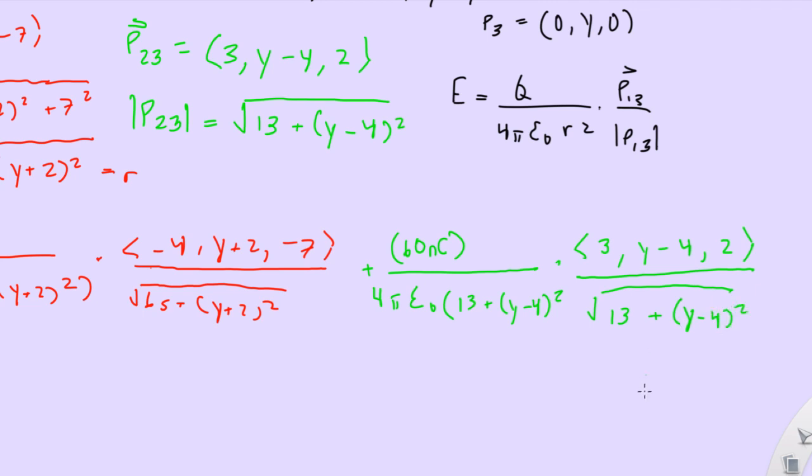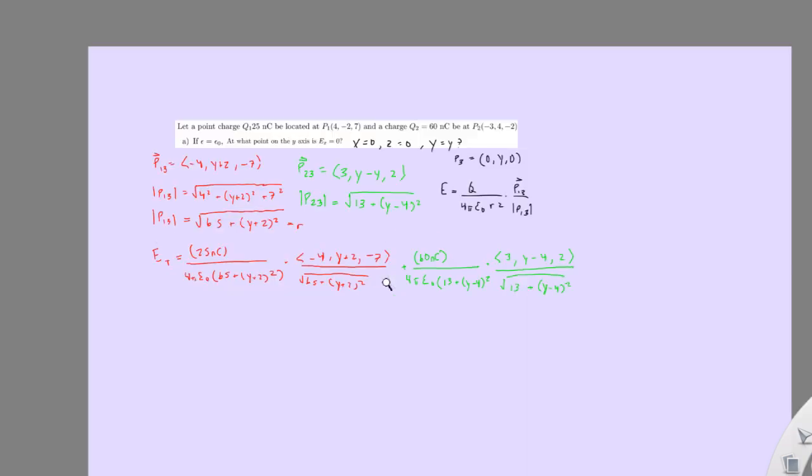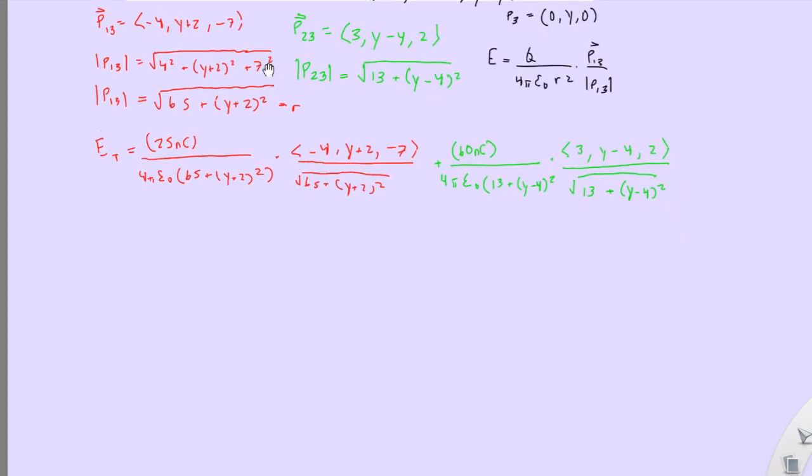This is negative 3, (y minus 4), and 2. And then it's going to be all over square root of 13 plus (y minus 4) squared. Okay, so, now, we effectively have the whole shebang. This is what the electric field is doing. For those two charges, this is how it's going to combine. We have everything we need. We have the direction of each charge and the magnitude that each charge is going to affect that point.